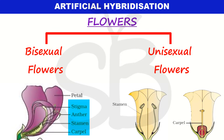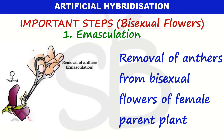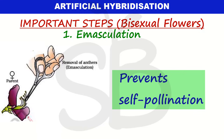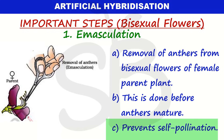Bisexual flowers have both male and female reproductive organs in the same flower. In this case, emasculation is required. Emasculation is the removal of anthers from the bisexual flower of the female parent plant. Bisexual flowers are prone to self-pollination, so we need to remove the pollen grains before the anthers dehisce. This is done before maturity and it prevents self-pollination.